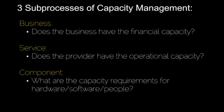Capacity management relies on three sub-processes. The first is business capacity management, where the most important purpose is to see whether the business has the financial capacity to carry out an activity or not. The second is service capacity management, which considers whether or not the service provider has the operational capacity to carry out an activity. The third and final sub-process is component capacity management, which looks at the capacity requirements related to all hardware, software, and even people.